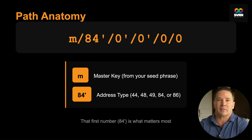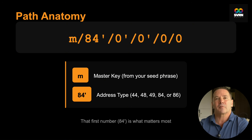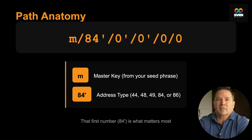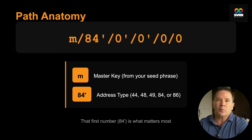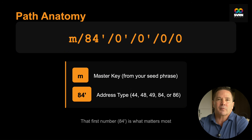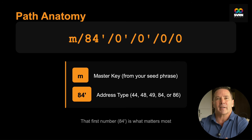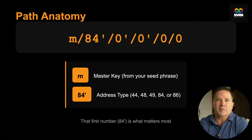When you look at the derivation path, it looks like this: M/84'/0'/0'/0/0. That looks like a bunch of gibberish and silly code, right? But it's really just an address or directions. The whole system follows what is called BIP 32 and BIP 44 — Bitcoin improvement proposals that standardized how wallets derive addresses from seed phrases. You don't need to memorize all these technical standards, but those are the terms to search for if you want to go down the rabbit hole.